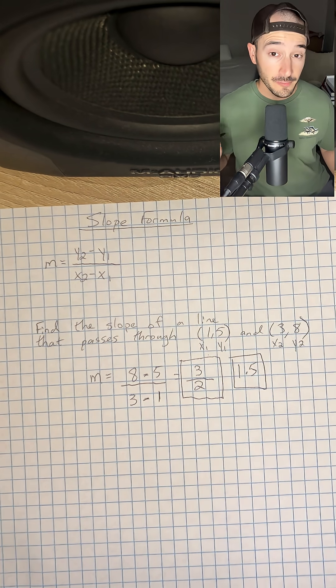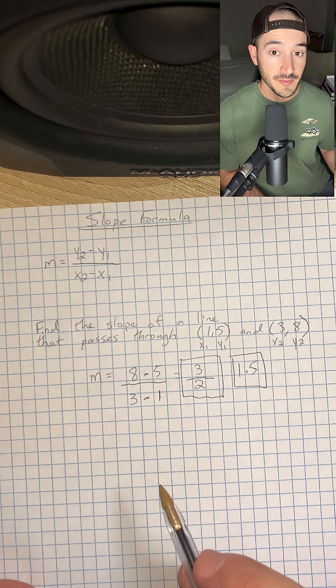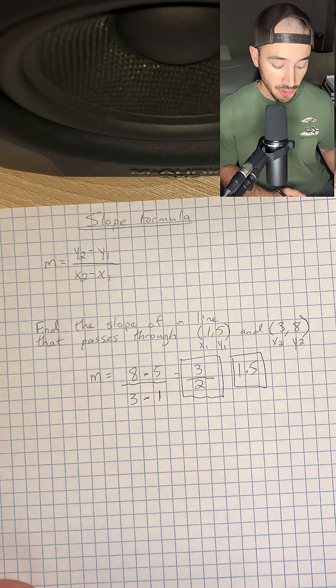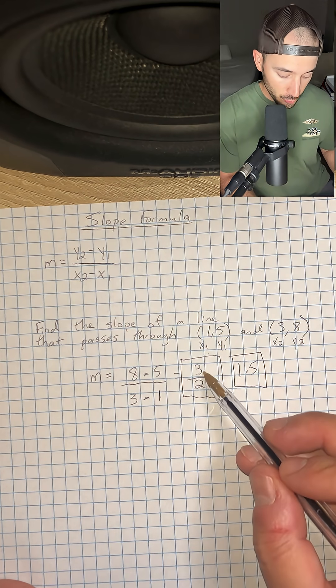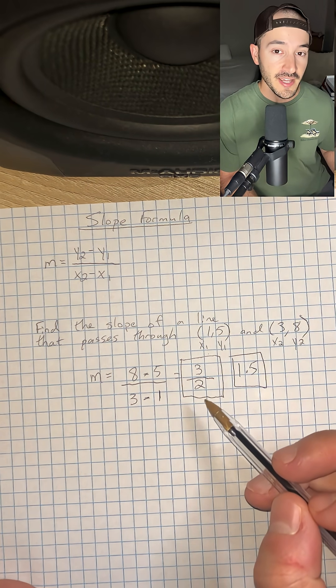Now a little bonus tip: since our slope is 3 over 2, you're also going to learn that slope is rise over run on a graph. So that means that 3 would be our rise and 2 would be our run. We'll be talking about that in the future.